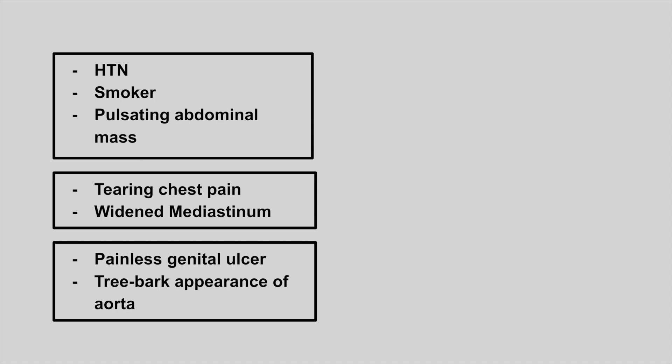The next one is someone who has high blood pressure, is a smoker, and has a pulsating abdominal mass. This is triple A, or abdominal aortic aneurysm.